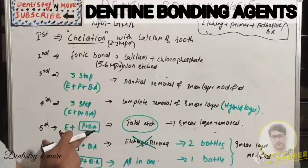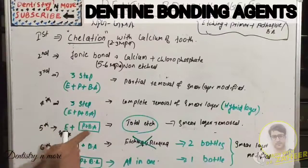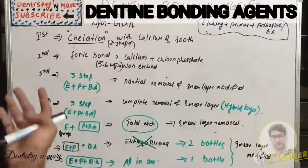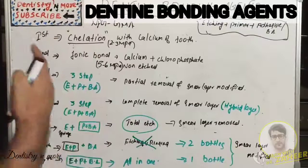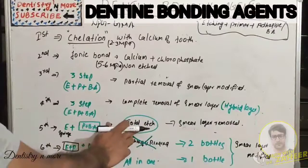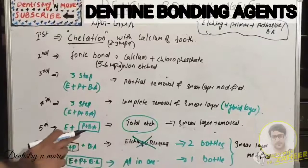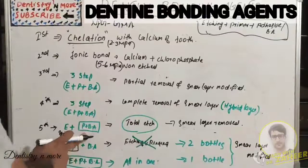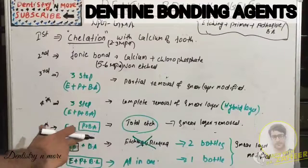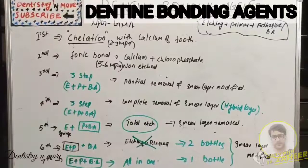In the fifth generation, primer and bonding agent are combined into a single bottle. Etchant is applied in gel form separately, and primer and bonding agent are in one bottle. This technique is known as total etch because it etches both enamel and dentin - there is no selective etching, and the smear layer is fully removed. The advantage is no separate primer application - just etch, rinse, apply the single bottle, and cure before composite. However, bond strength of the fifth generation is inferior to the fourth generation.